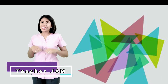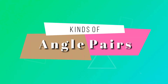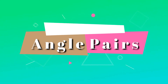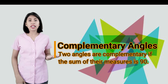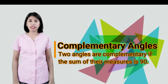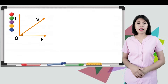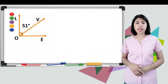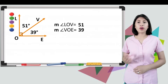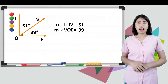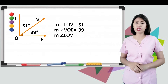Now let's start with the kinds of angle pairs. Number 1 is complementary angles. Two angles are complementary if the sum of their measures is 90. Consider this figure. We have angle LOV and angle VOE, wherein measure angle LOV is equal to 51, and measure angle VOE is equal to 39. We can say that these two angles are complementary if the sum of their measures is 90.